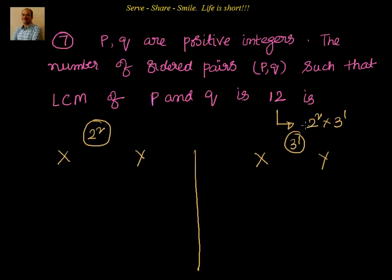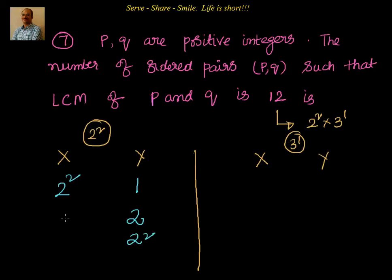Since LCM means the highest powers of the factors, if we want numbers X and Y with LCM 12, one of them must have 2². If X has 2², then Y can have 1, 2, or 2². That gives us three combinations. Similarly if Y has 2², then X can have 1 or 2 — giving two more combinations.